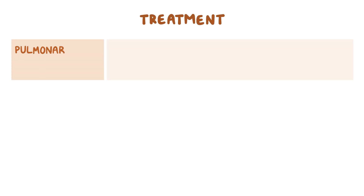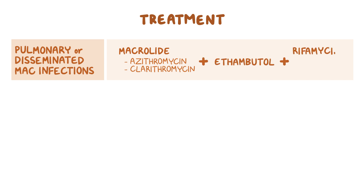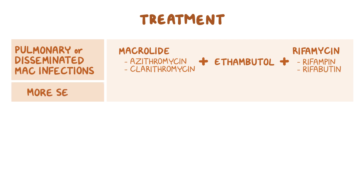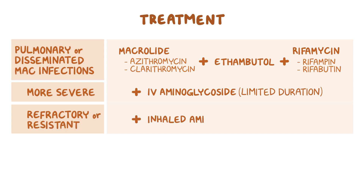For treatment of pulmonary and disseminated MAC infections, a combination of a macrolide such as azithromycin or clarithromycin, plus ethambutol and a rifamycin such as rifampin or rifabutin, is used. In more severe disease, an intravenous aminoglycoside may be used for limited duration. For those with refractory disease or whose organisms have developed macrolide resistance, the addition of inhaled amikacin or clofazimine can also be considered.